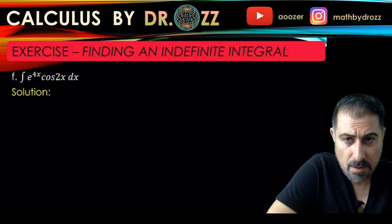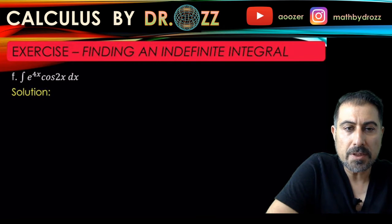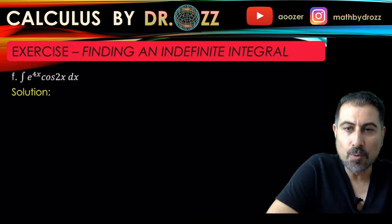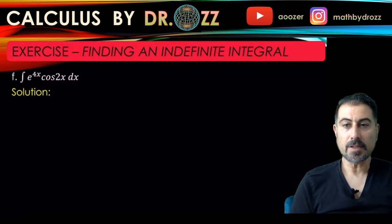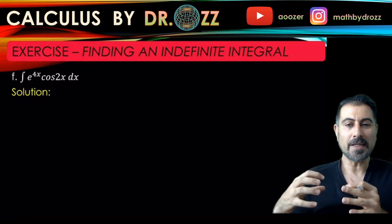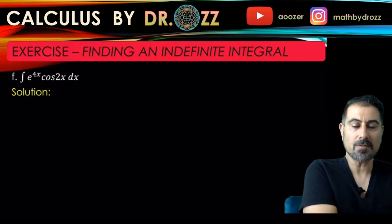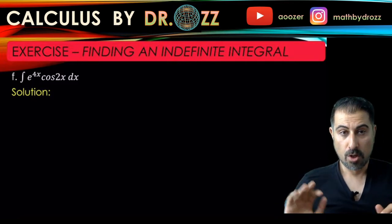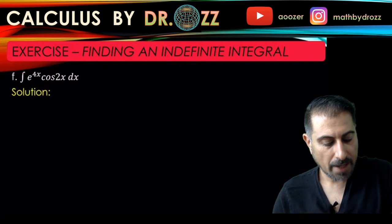When you apply integration by parts once, you're not done and you have to do it again. When you do it twice, you will get an integral in the final result that contains e to the 4x cosine 2x. That's why I call it a looping integral - the integral you start with pops up on the right-hand side of the equation.